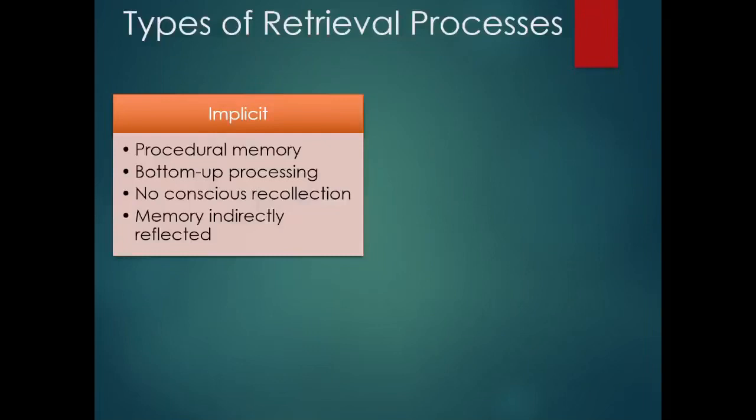You don't have any sense of conscious recollection with an implicit process. It's something that your body just responds with or maybe your brain just responds with. With implicit memories we typically are going to have to infer that a memory underlies that response, it's indirectly reflected. So we assume that you must know it because look what you just did, it must be in your memory store.